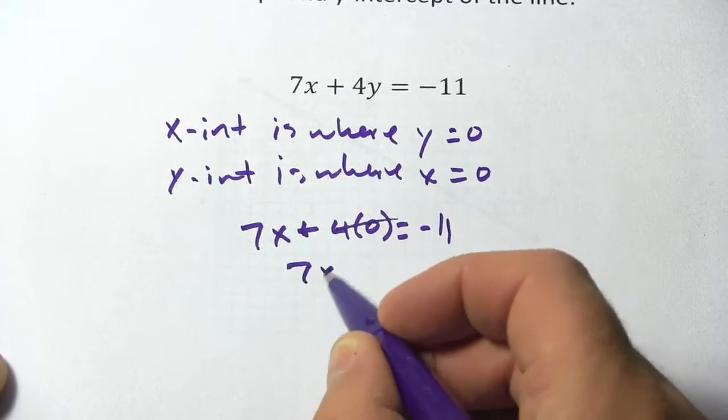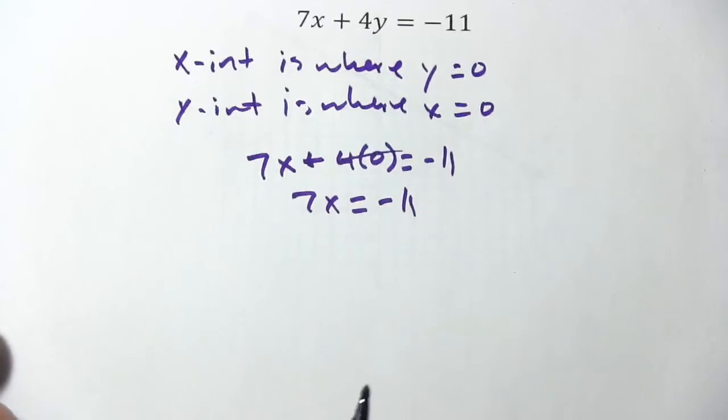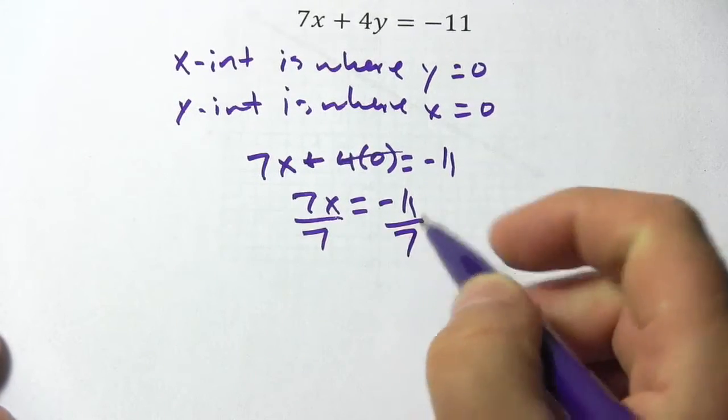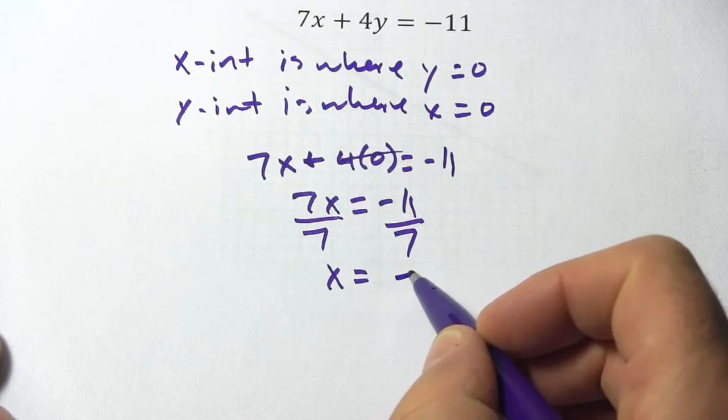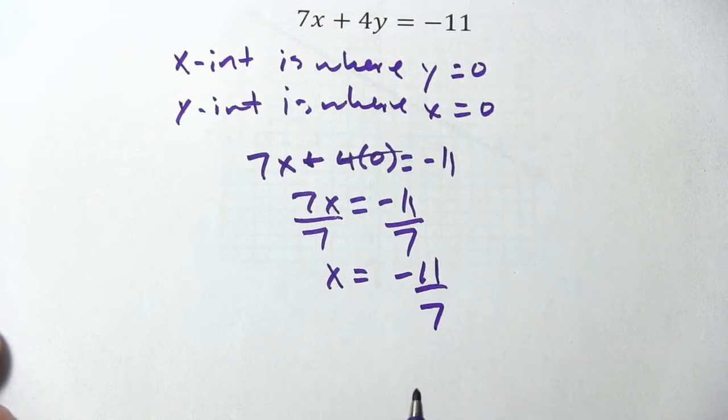We have 7x equals negative 11 and we can solve for x here and we get x equals negative 11 sevenths. That is our x-intercept.